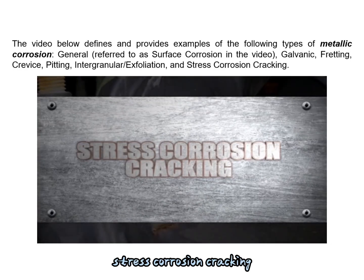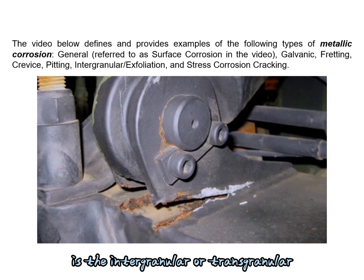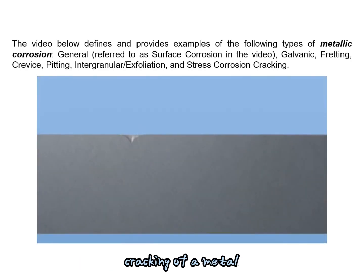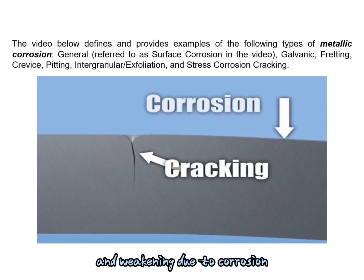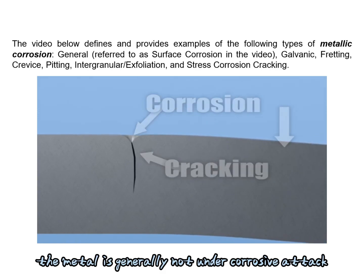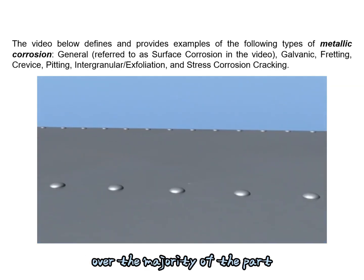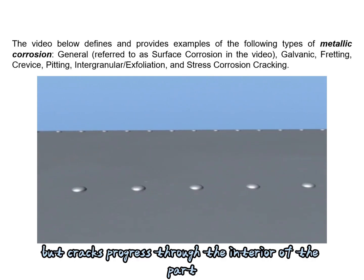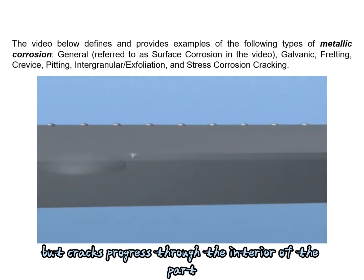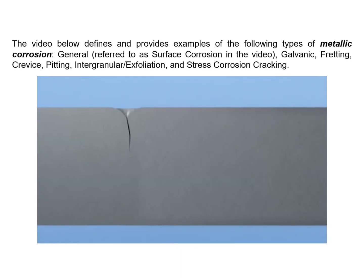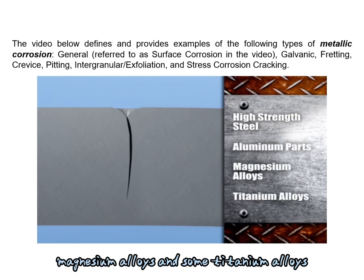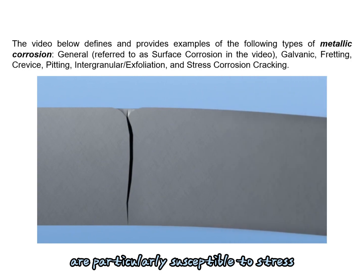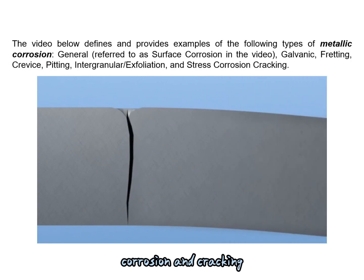Stress corrosion cracking is the intergranular or transgranular cracking of a metal due to stress on the metal and weakening due to corrosion. The metal is generally not under corrosive attack over the majority of the part, but cracks progress through the interior. High-strength steel and aluminum parts, magnesium alloys, and some titanium alloys are particularly susceptible to stress corrosion cracking.